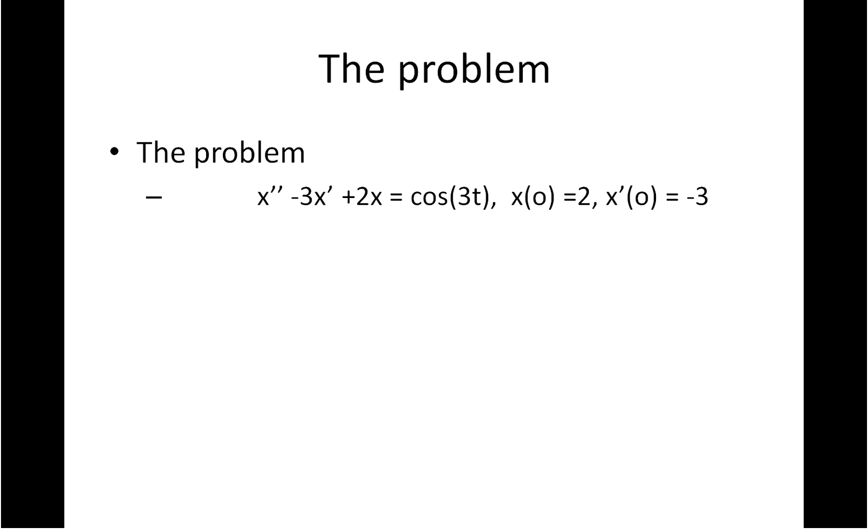So there's the problem, d2x dt squared minus 3 dt dx plus 2x equals cos 3t. And there's the initial values.